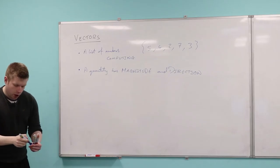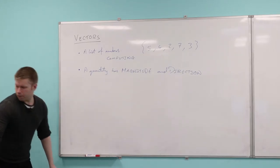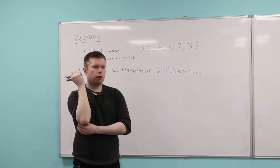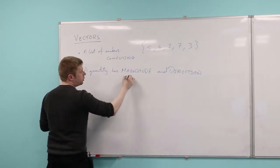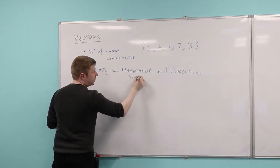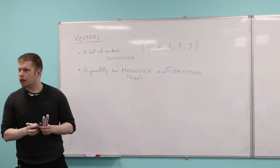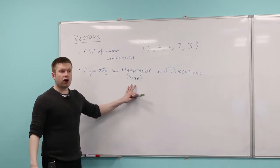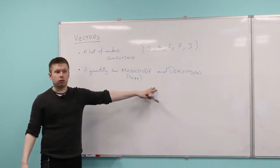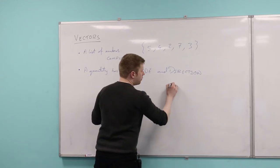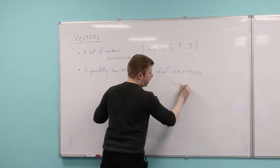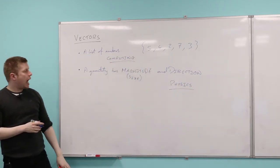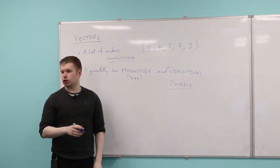What does the word magnitude mean? Does anybody know? It's just simply a fancy word for size. So it could be length, could be weight, could be height, could be distance. It's just simply a fancy word for size. You're happy with direction as well. So this would be the physicist's definition of what a vector is. So you've got a computing definition and you've got a physics definition.